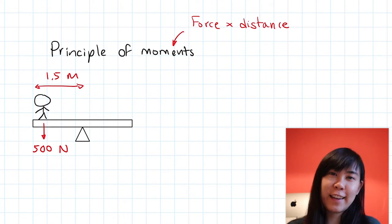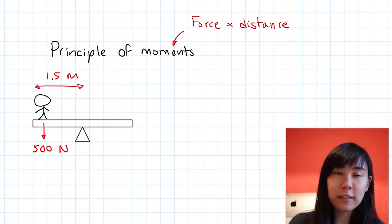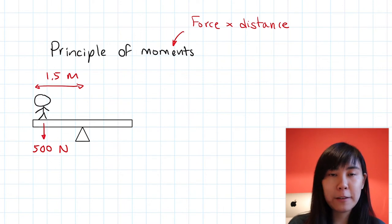So when this guy is standing on the seesaw, he's going to tilt it towards the left-hand side due to his weight. So the question is, if we know that there's this other guy whose weight is 600 newtons, where must he stand on the seesaw in order to balance it?